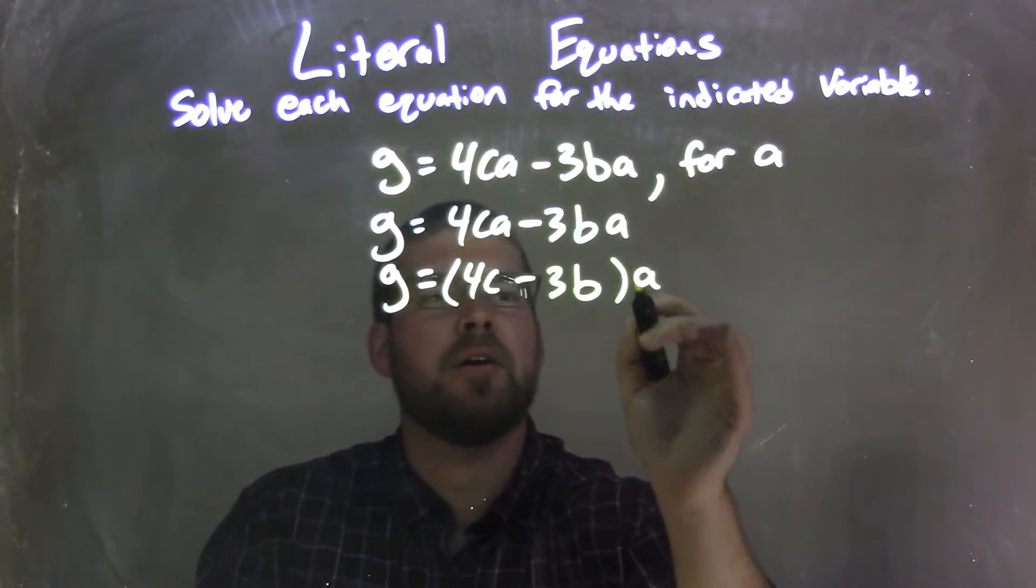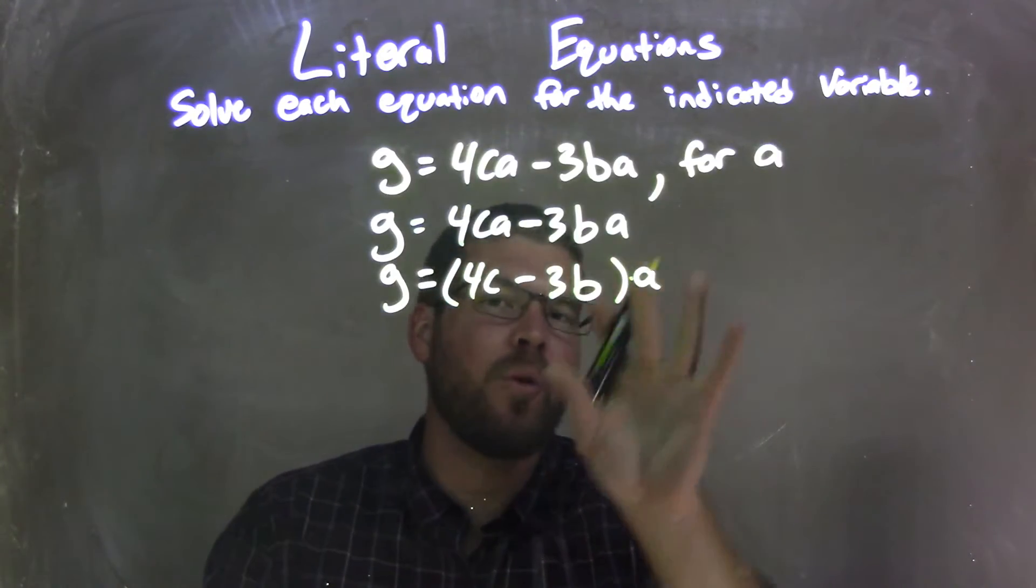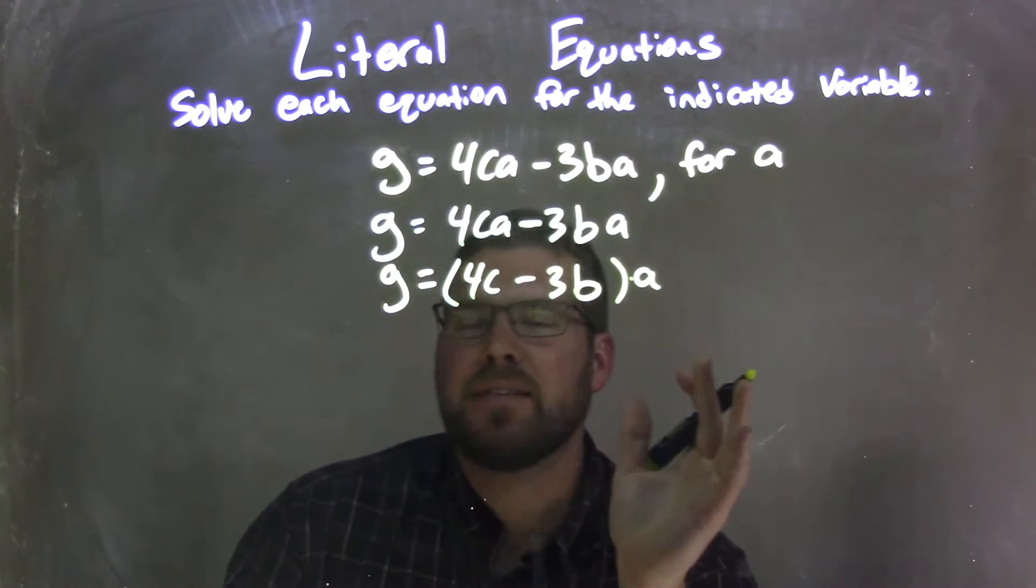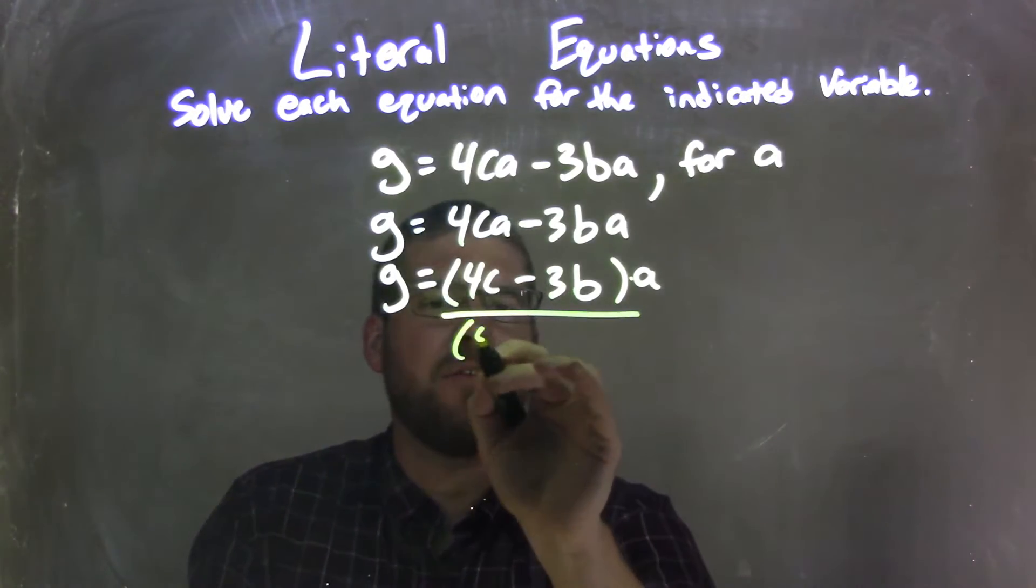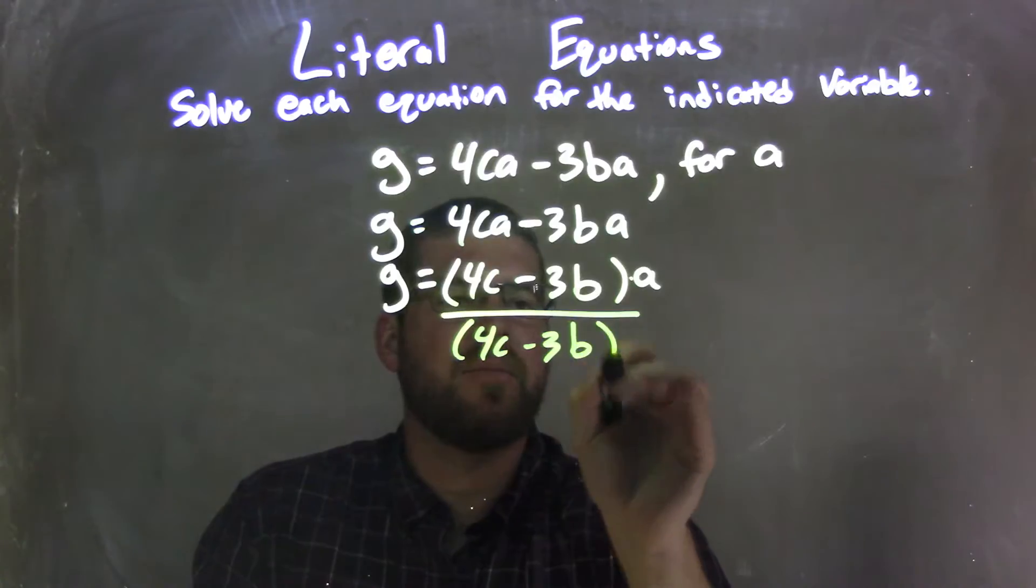But by pulling it out here, I now have multiplication in A. There's only one A now left, which makes it nice. So now I can divide by, while it's inside the parenthesis, 4C minus 3B to both sides.